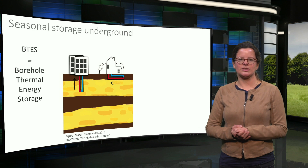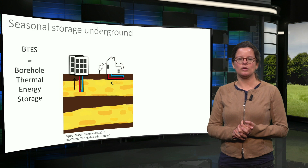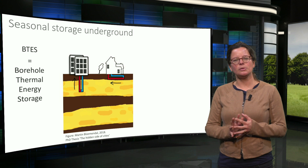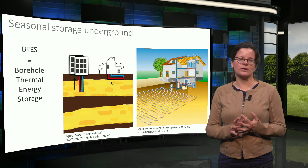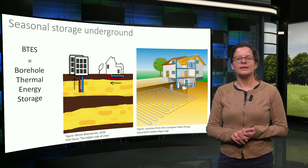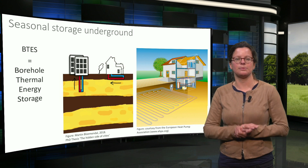Also, ground heat exchangers can be used to cool and heat buildings combined with a heat pump. These systems are called BTES systems: borehole thermal energy storage. Vertical boreholes are the most common, but also horizontal ground heat exchangers can be applied. The figure on the right shows a scheme of a dwelling with a heat pump using a horizontal ground heat exchanger as a source for the heat pump.